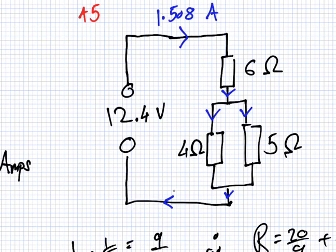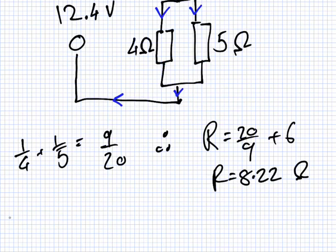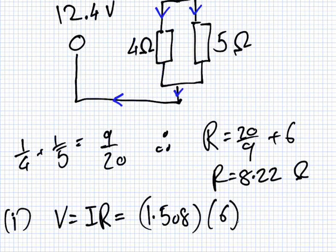Okay. First question, what is the voltage in the six ohm resistor here? So what law could I use here? Again, just V equals IR. So that would be 1.508 multiplied by 6. So I got 9.05 volts. Well, 9.048. It's about 9.05 volts. That's the potential voltage. That's the voltage. Yeah, in the six ohm resistor.